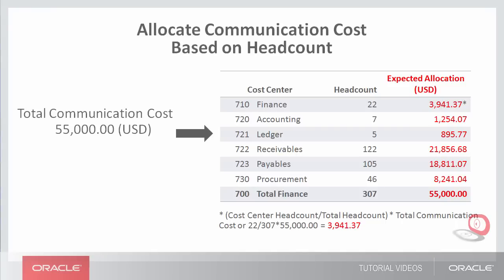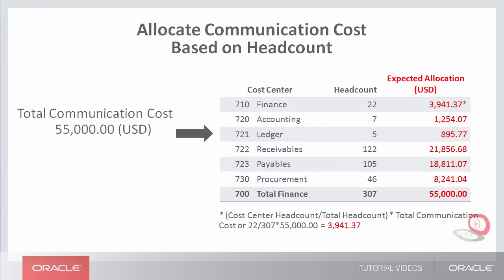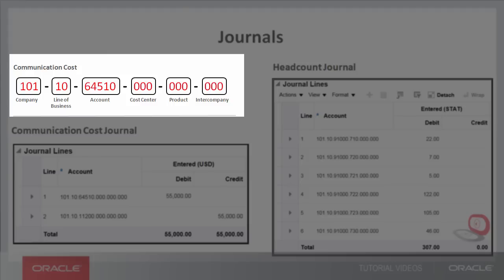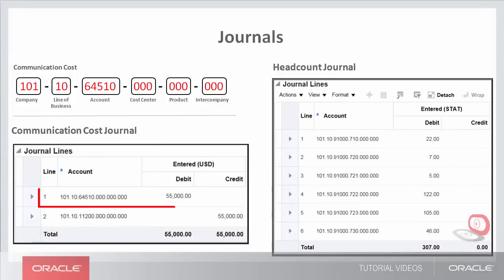In this example, I'm going to distribute the communication cost of $55,000 across six cost centers based on headcount. The chart of accounts has six segments: company, line of business, account, cost center, product, and intercompany. The communication cost is recorded in this account — this is the source of the allocation. Headcount is recorded in account 91,000 using the stat or statistical currency, and all six cost centers are under parent cost center 700.